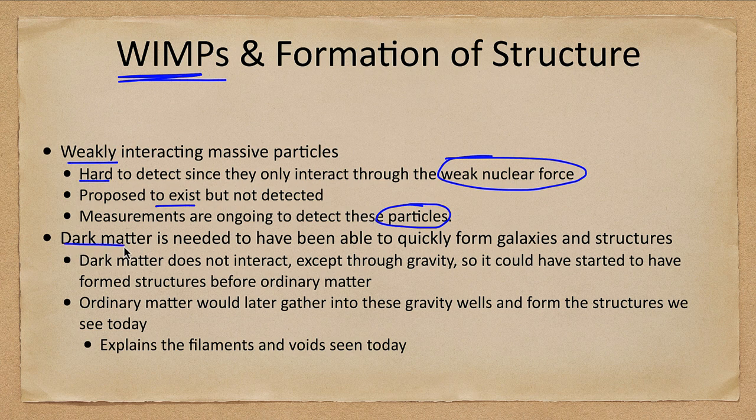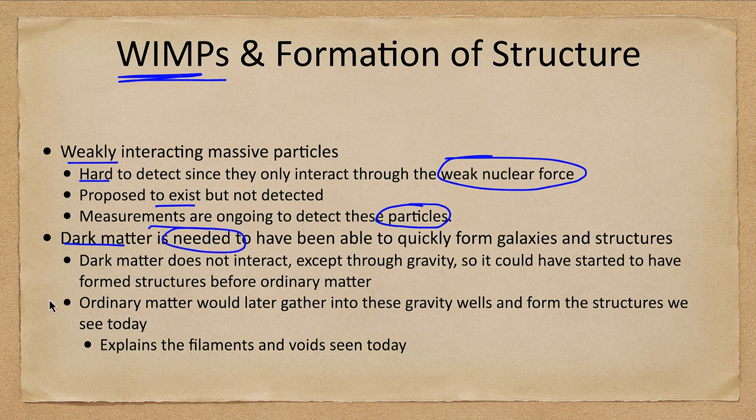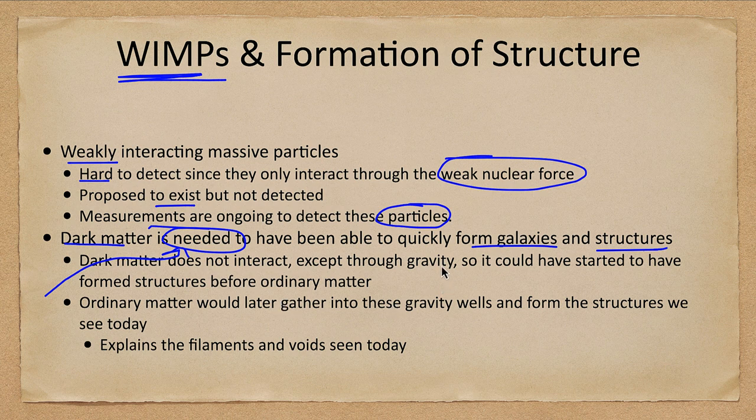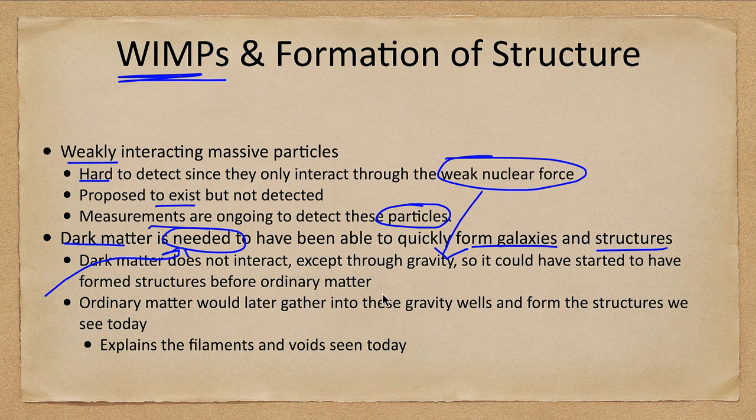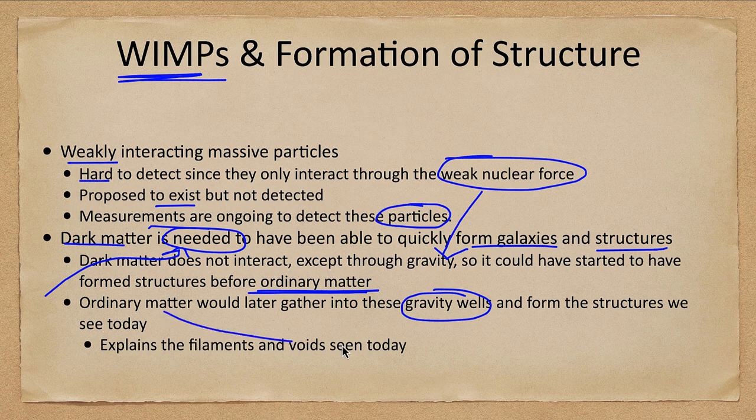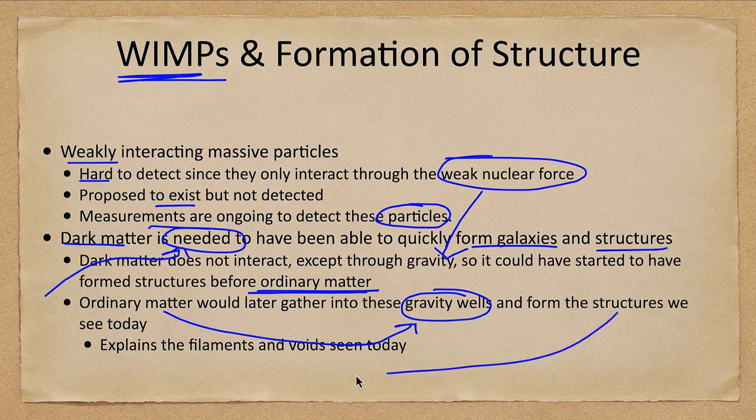Dark matter is needed. We have to have it. It is a requirement in order to form galaxies and structures on the time scales that they formed in our universe. We know that dark matter does not interact except through the weak nuclear force and gravity. So it could have started to form structures before ordinary matter, allowing us to form these structures. It would start to form some gravity wells, and the ordinary matter would then gather into these gravity wells and form the structures that we see. That would form the filaments and voids that we see today.